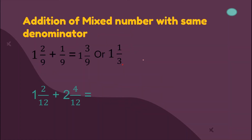How about this one? Just add our whole numbers: 1 plus 2 is 3. Add our numerators: 4 plus 2 is 6. And copy the denominator, 12. Again, this only applies if we have the same denominator. We can still simplify 6 over 12 by dividing it by 6. Our final answer is 3 and 1 half, because 6 divided by 6 is 1, and 12 divided by 6 is 2.